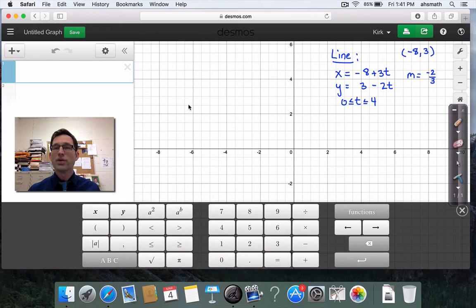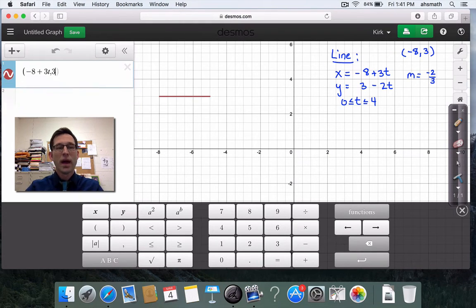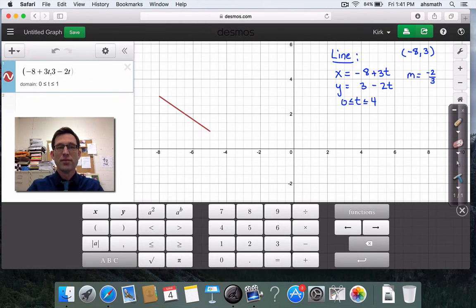We're going to graph it very similar to the way that we try to graph a coordinate point. In fact, I'm going to start by putting in a parenthesis. And I'm going to type in the equation for x, negative 8 plus 3t. Now, notice it's asking me to put a slider in for t. Don't do it. Just put a comma. And that slider piece is gone.